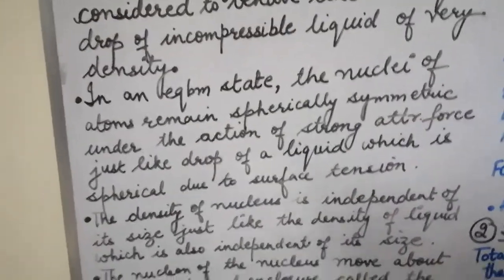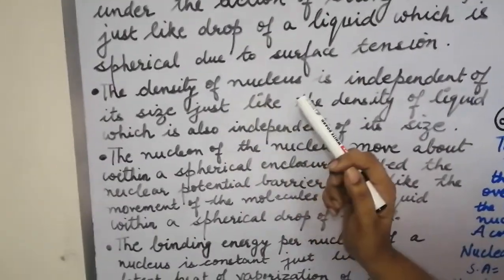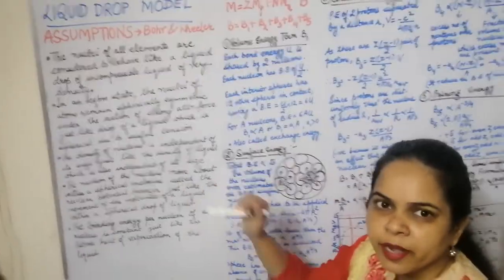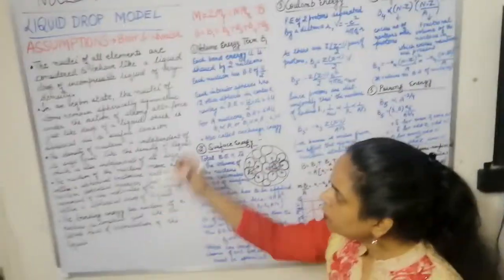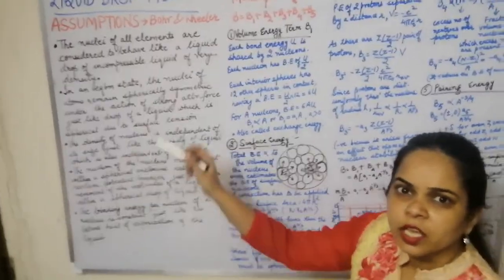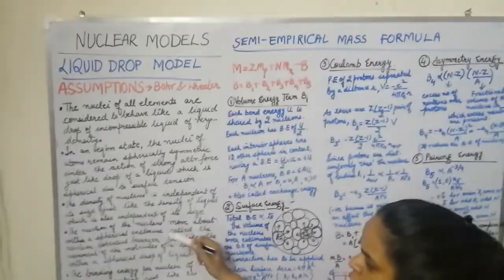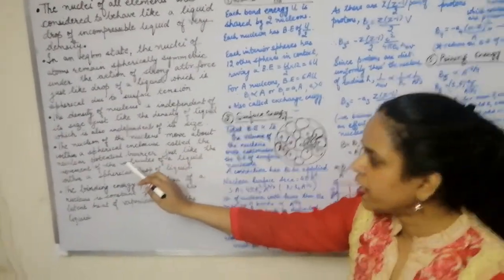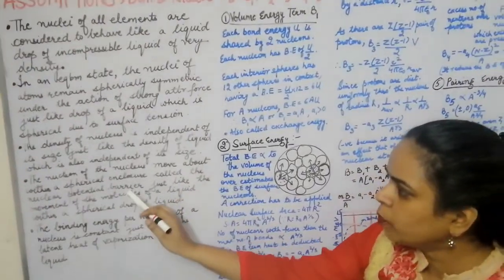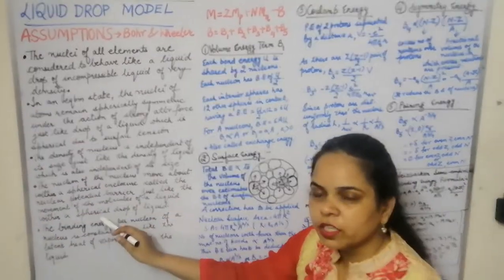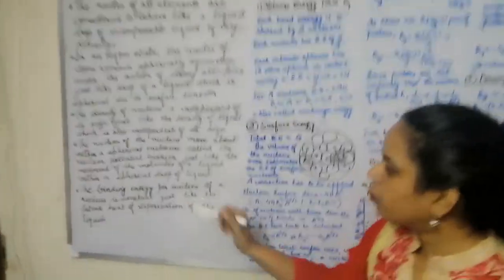The third assumption was that the density of the nucleus is independent of the size of the nucleus, analogous to liquid density being independent of size. The fourth assumption was that the nucleons move within a spherical enclosure called the nuclear potential barrier, just like the movement of molecules within a spherical drop of liquid.